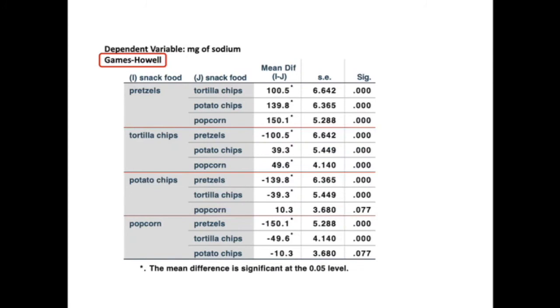The multiple comparison table looks exactly like that for the Tukey HSD. The easiest way to tackle these results is to skim down the p-value column. The only mean pair that is not significantly different is potato chips and popcorn. The null hypothesis for all other mean pairs would be rejected.